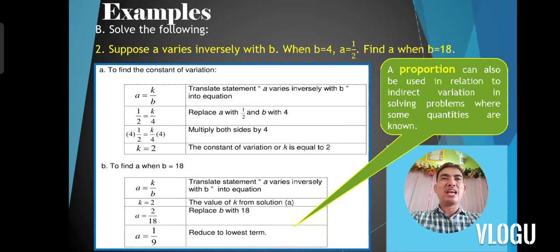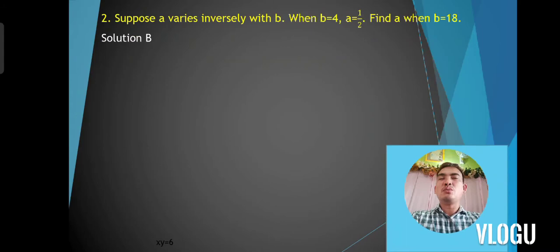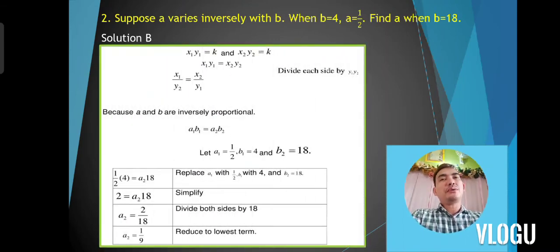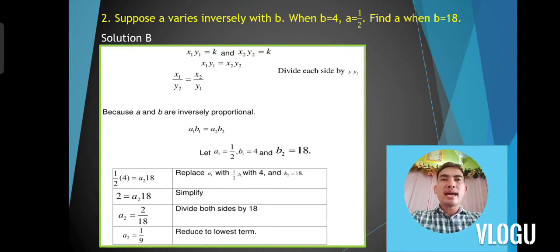A proportion can also be used in solving inverse variation problems where some quantities are known. Since a and b are inversely proportional, you can use x₁ times y₁ is equal to k and x₂ times y₂ is equal to k. Because k equals k, you can equate x₁ times y₁ equal to x₂ times y₂. Dividing each side by y₁ times y₂ gives x₁ over y₂ is equal to x₂ over y₁. From our problem, a₁ times b₁ is equal to a₂ times b₂.